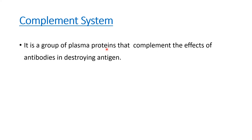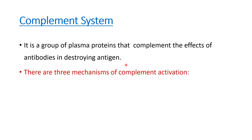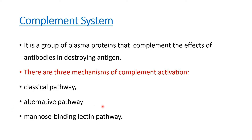We will now discuss the complement system. We mentioned that antibodies can activate the complement system to destroy pathogens. The complement system is a group of plasma proteins that complement the effects of antibodies in destroying antigens. There are three mechanisms of complement activation: the classical pathway, the alternative pathway, and the mannose-binding lectin pathway. We will focus on the classical pathway.